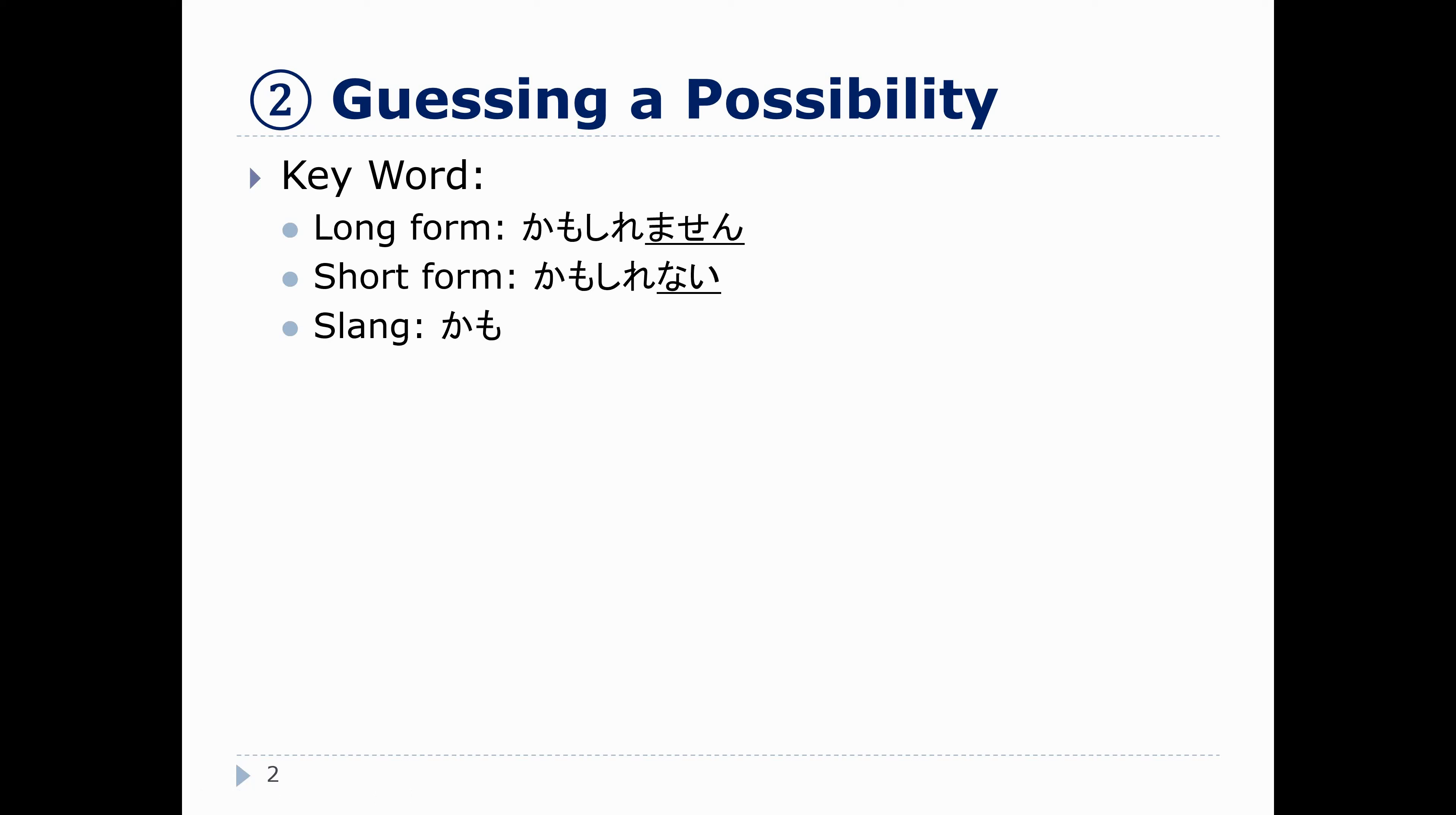But, in our homework and on the test right now, we're going to concentrate on the long form. So, we're going to use かもしれません to talk about guessing a possibility. So, かもしれません. It's always しれません or しれない. It's always a negative ending.